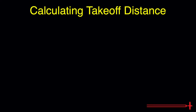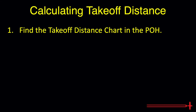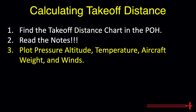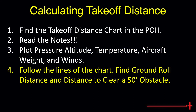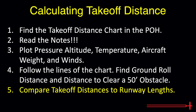Let's recap the steps to find takeoff distance in the Diamond DA-40. Step 1: find the takeoff distance chart in the POH. Step 2: read the notes. Step 3: plot the lines for pressure altitude, temperature, aircraft weight, and wind. Step 4: follow along the lines on the chart to find both ground roll distance and the distance required to clear a 50-foot obstacle. Step 5: compare those distances to runway lengths to ensure a safe takeoff.